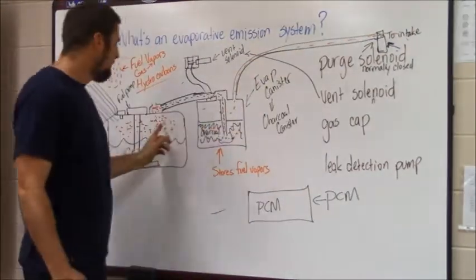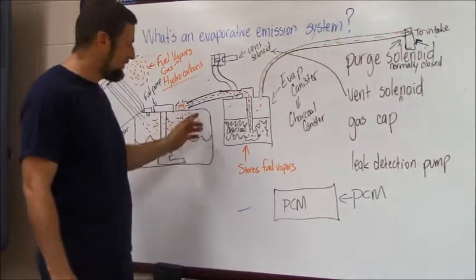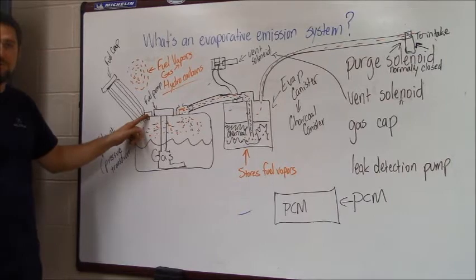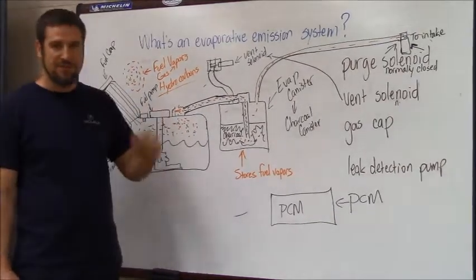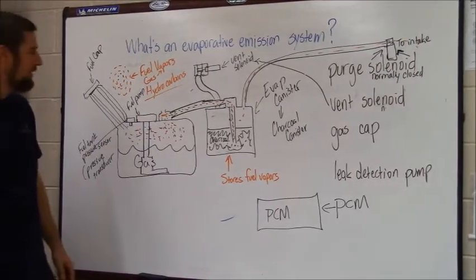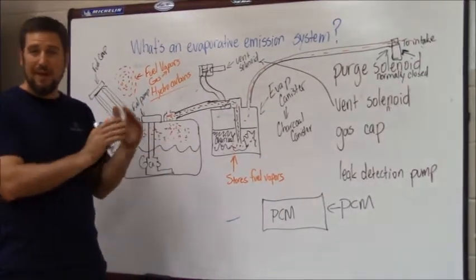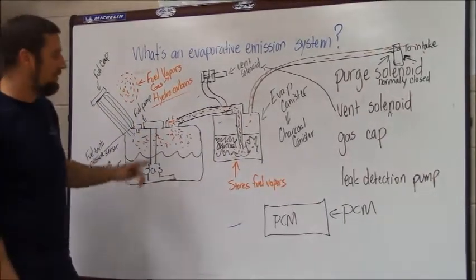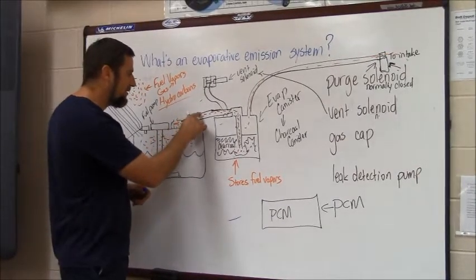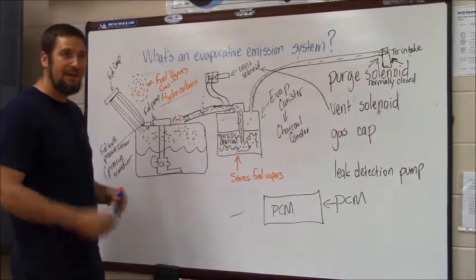Starting at atmospheric pressure, as the engine draws air out of the system a vacuum builds in the tank. The engine controller monitors this through the fuel tank pressure sensor. It draws down to a specific vacuum level, then closes the purge solenoid and waits — running a timer — to see whether that vacuum holds or decays. If the evaporative system holds that vacuum for the required time, the test passes with no check engine light. But if vacuum decays — even from a small tear in a hose allowing atmospheric pressure in — it will not pass the test.